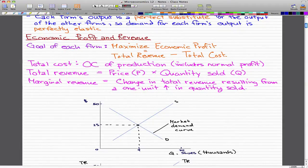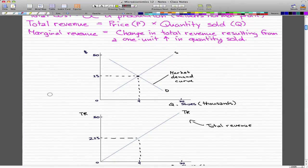What are the goals of each firm? The goal of each firm is to maximize economic profit, which means total revenue minus total cost. Total cost is the opportunity cost of production and includes normal profit. Total revenue equals price times quantity sold, which is P times Q. Marginal revenue is the change in total revenue resulting from a one-unit increase in quantity sold.